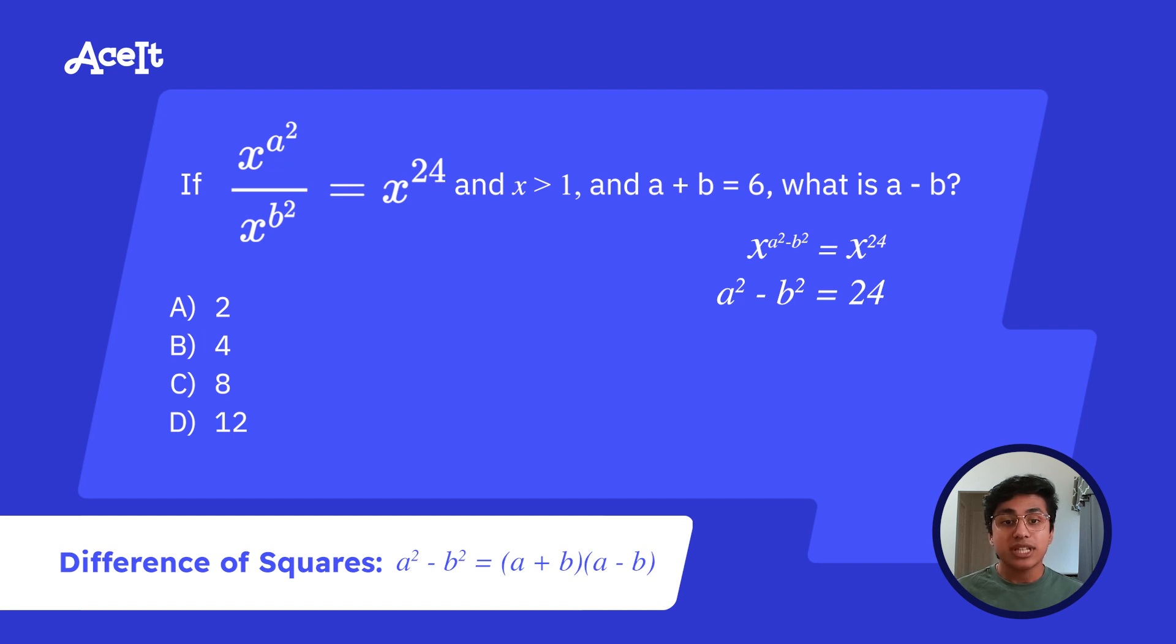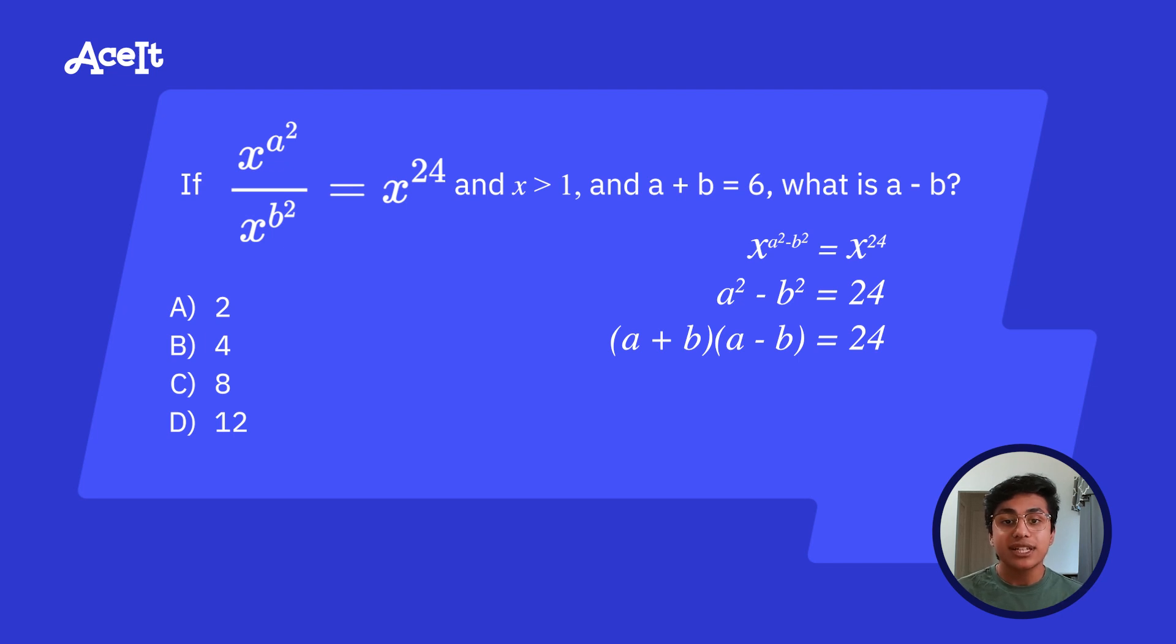So why don't we change our expression now to reflect that? And we know we're on the right track here because the question gives you the value of a plus b. So why don't we just substitute that in here? We have 6 times a minus b is equal to 24. And we're being asked for the value of a minus b. So what times 6 is equal to 24? 4 times 6. So now we know the answer is answer choice B because 6 times 4 is 24.